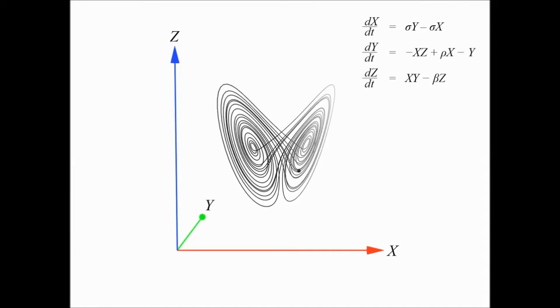Notice that when the system is in one lobe, x and z are positively correlated, and when the system is in the other lobe, x and z are negatively correlated.